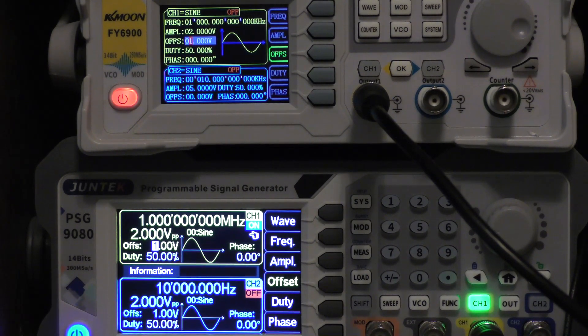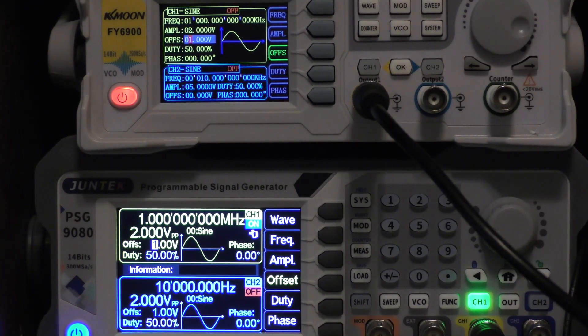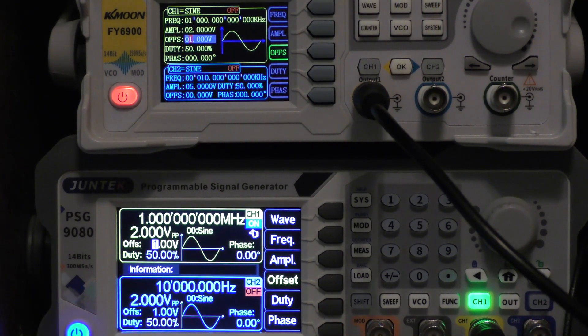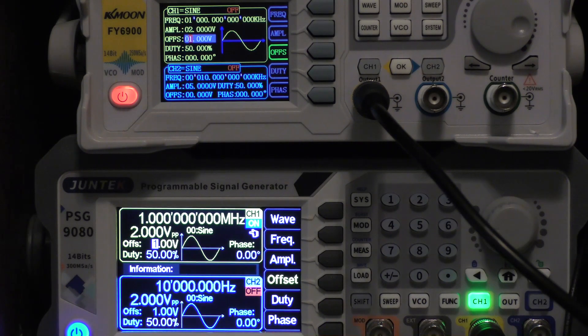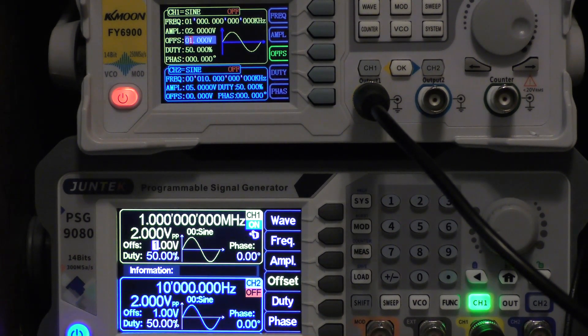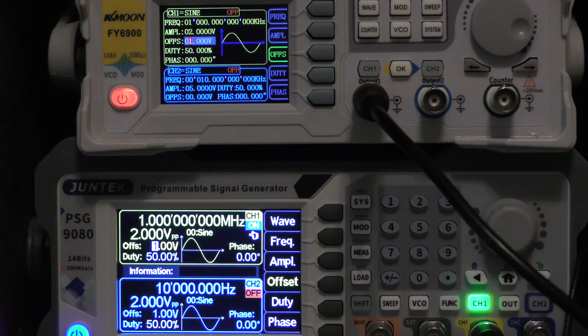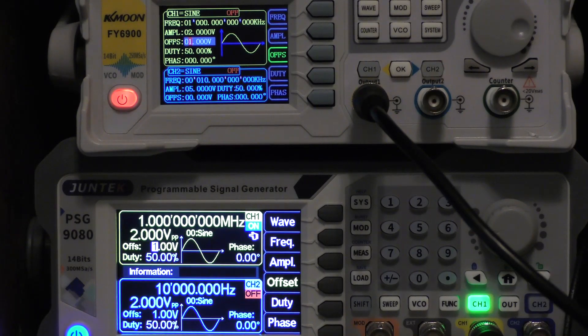So not that there's anything wrong with that, it's just something you need to keep in mind. When you set an offset it's there for all the outputs, at least on that channel. Now it does store a different offset for channel 2 than for channel 1, but if you set a channel 1 offset and then switch waveforms, the same offset will be there.